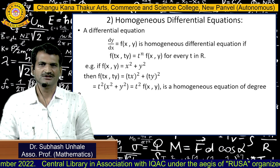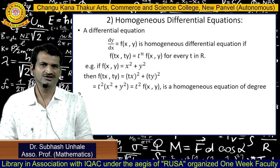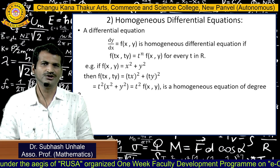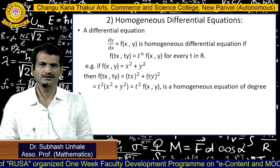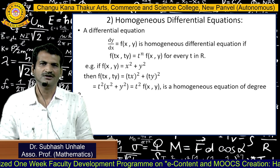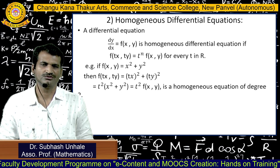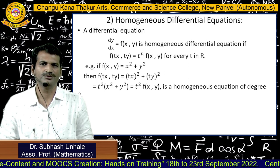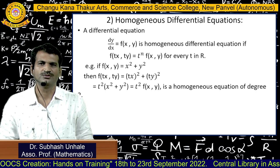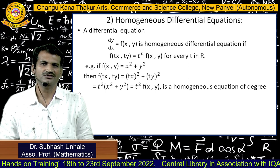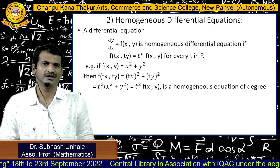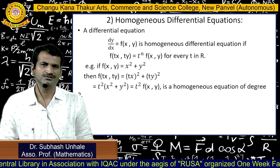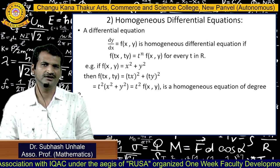The second method is for homogeneous differential equations. A differential equation dy/dx = f(x, y) is homogeneous if f(tx, ty) = tⁿ·f(x, y) for any real number t, where n is called the degree of the homogeneous equation. For example, if f(x, y) = x² + y², replacing x and y by tx and ty gives t²(x² + y²) = t²·f(x, y), so this function is homogeneous of degree 2.